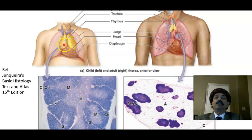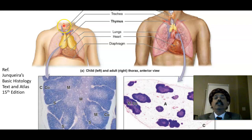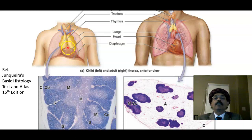The thymus gland shown here is that of a child. We must not confuse it with the thyroid gland. The thyroid gland is an endocrine gland, while the thymus is a lymphoid structure — these two are different entities.